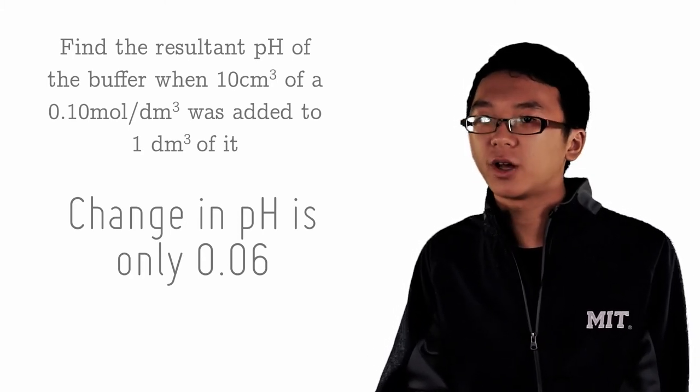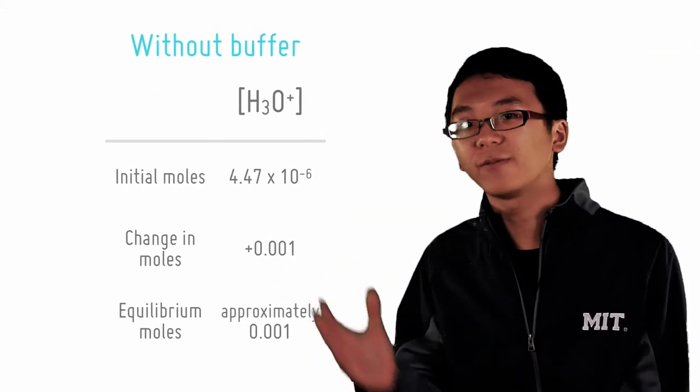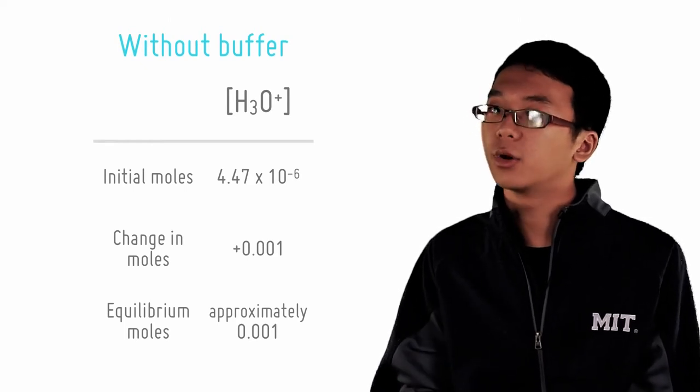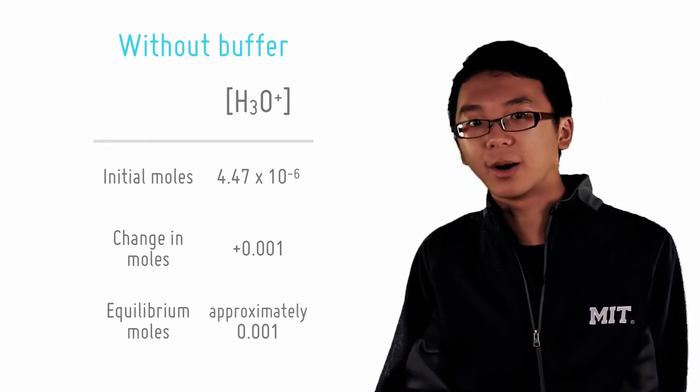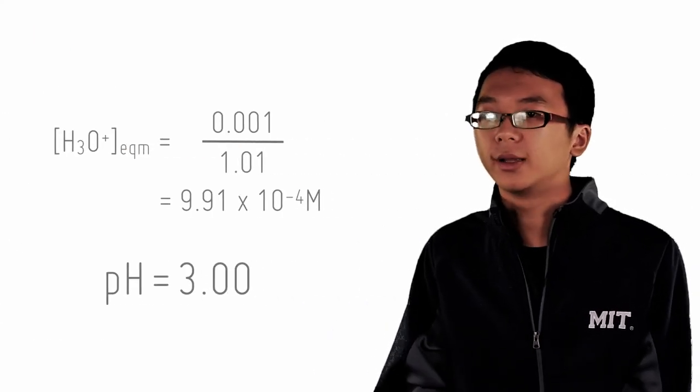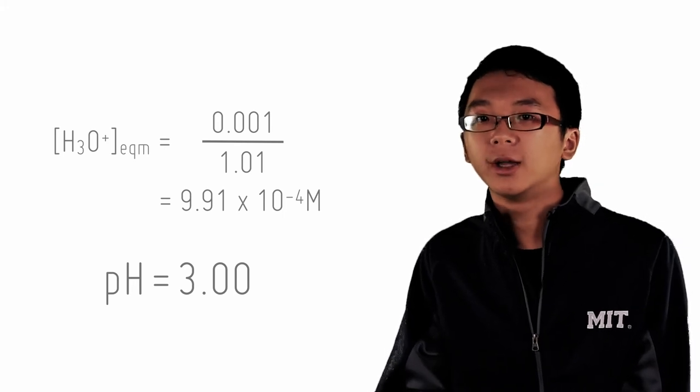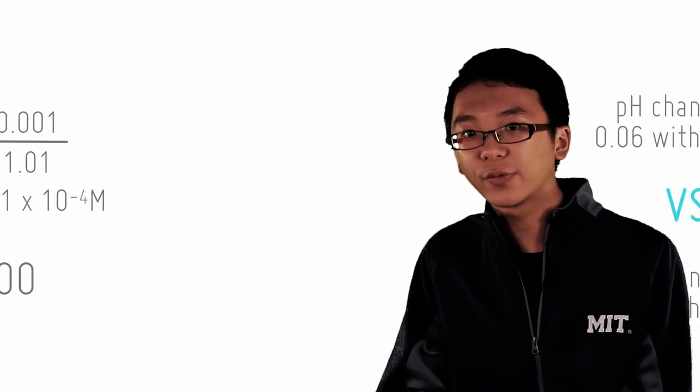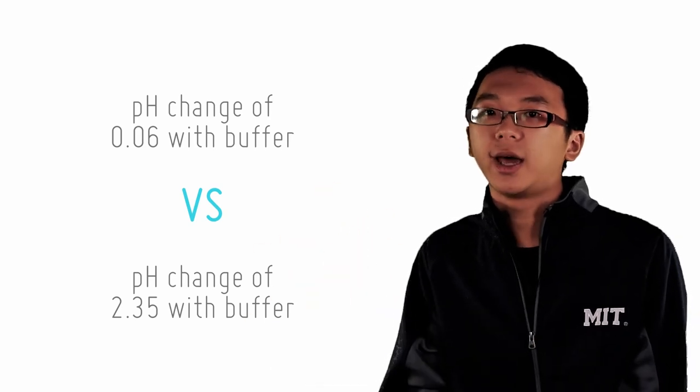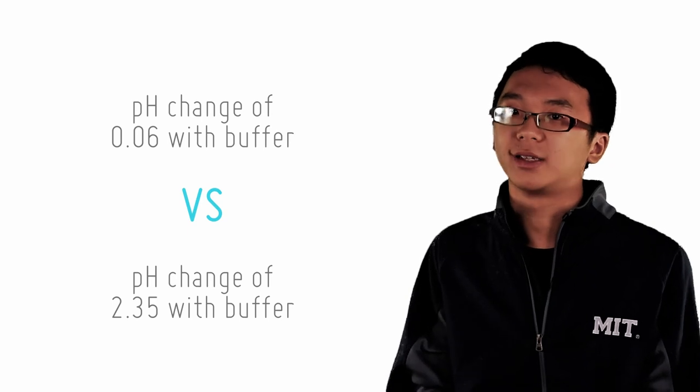Contrast this with the addition of the same amount of acid to an unbuffered solution at pH 5.35. We can find the initial number of moles of acid, add the relevant number of moles of acid HCl, get the final number of moles of acid divided by the new volume to get the new concentration, doing a negative log 10 of this, we get the pH equals to 3. And that is really significant. A difference of 2.35 compared to 0.06. And it was only 10 cm³ of 0.1 molar acid which is dilute.